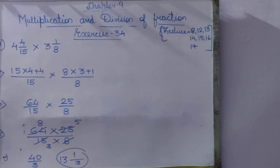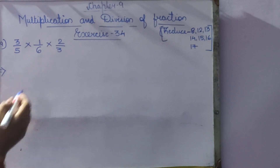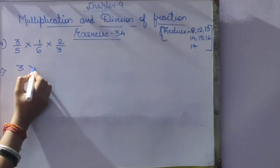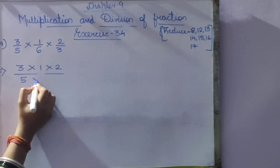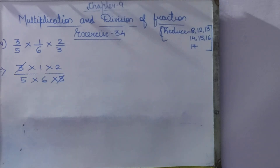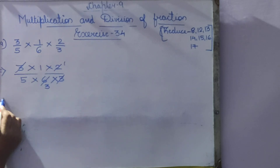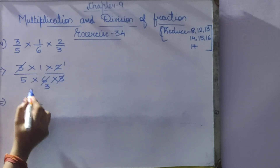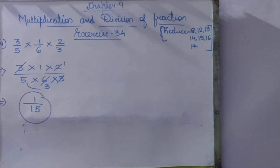Question 19: 3/5 × 1/6 × 2/3. So 3 × 1 × 2 divided by 5 × 6 × 3. The 3 in the numerator and 3 in the denominator cancel. Then 2 and 6 simplify: 2 ones are 2 and 2 threes are 6. What remains is 1 in numerator and 5 × 3 = 15 in denominator. Answer is 1/15.